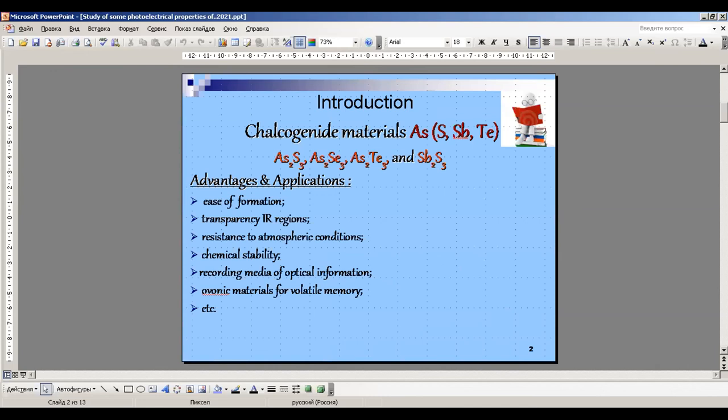Some words about the materials which are of interest in these areas of research. The compounds of arsenic sulfur, arsenic selenium, arsenic silver, and stibium sulfur are the most intensely studied chalcogenides because of their easy formation, transparency in infrared regions, and resistance to atmospheric conditions.